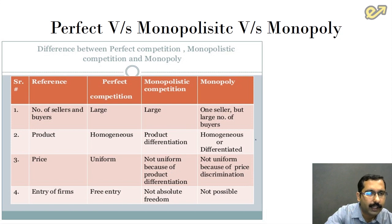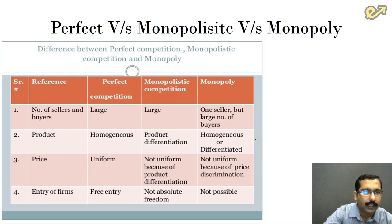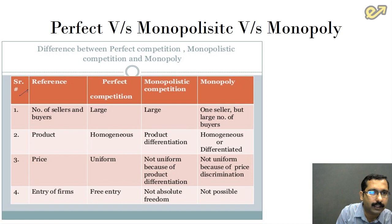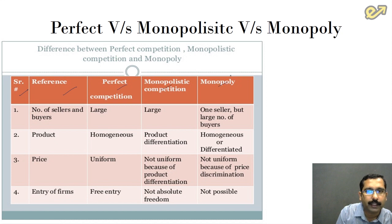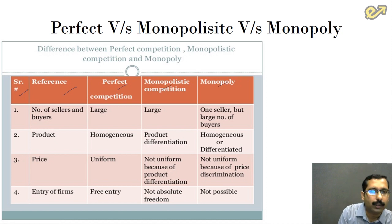Here we have lined up the most important differences among all three market structures, and it is very important for us to remember this. We have taken five columns: the serial number, the basis of differentiation, perfect competition, monopolistic competition, and monopoly competition. Now let us see how it works.